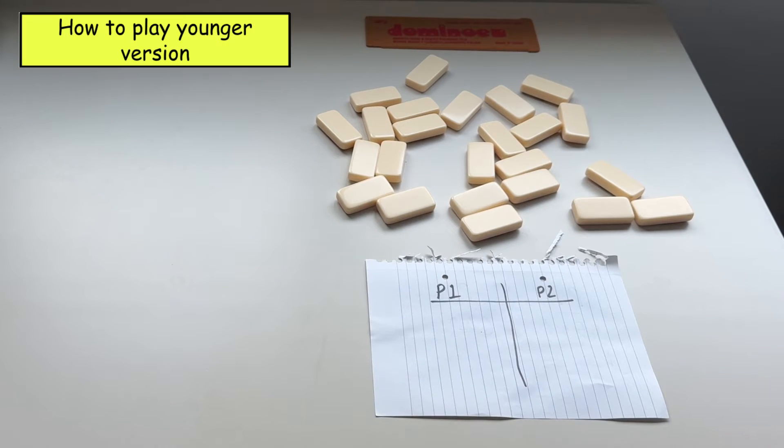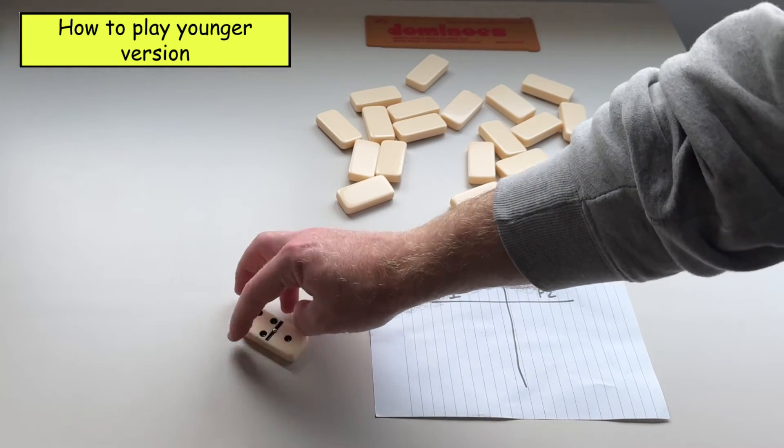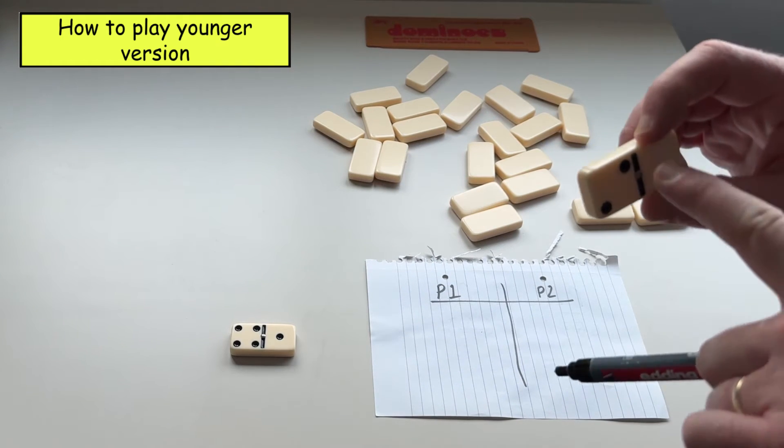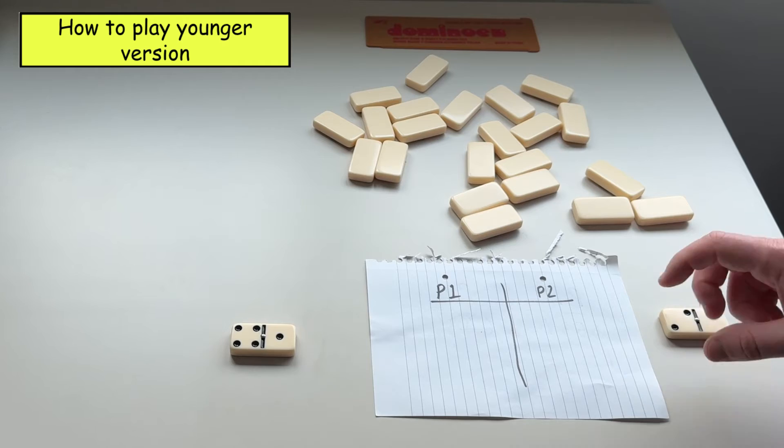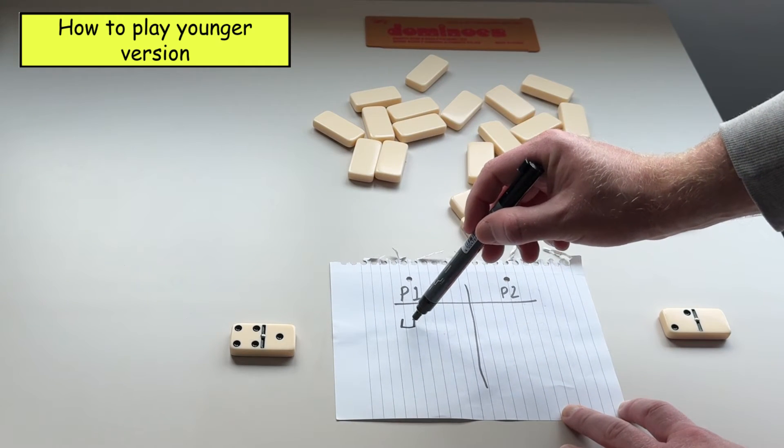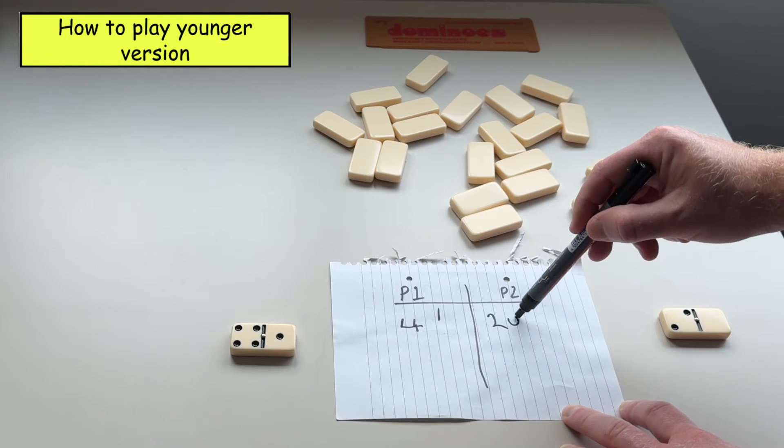So an alternative way you can play this game when playing with younger students is by just picking one domino each. So that would make a two digit number. Now if you see a blank that is just a zero. So player one here would make 41 and player two would just have the number 20.